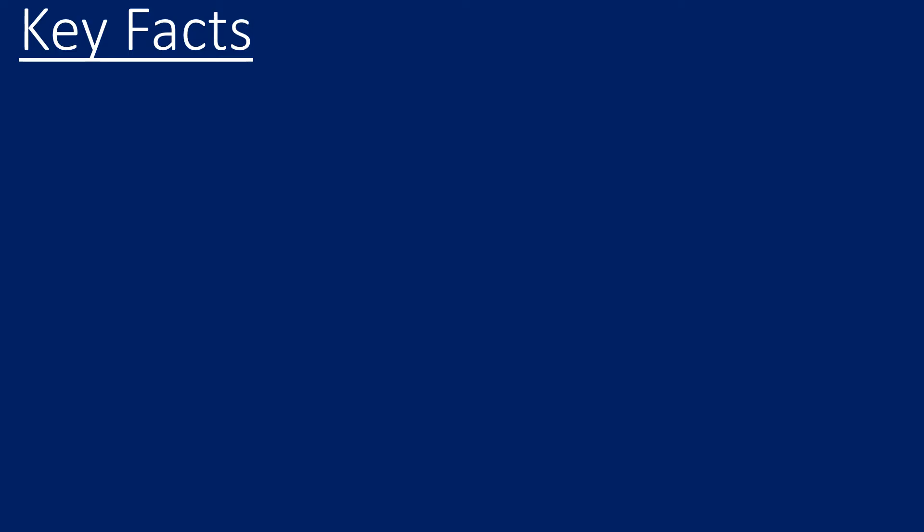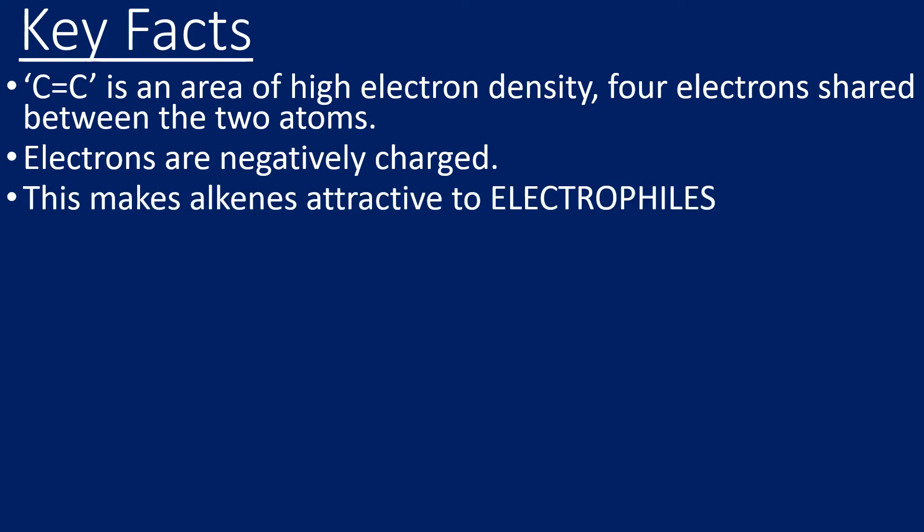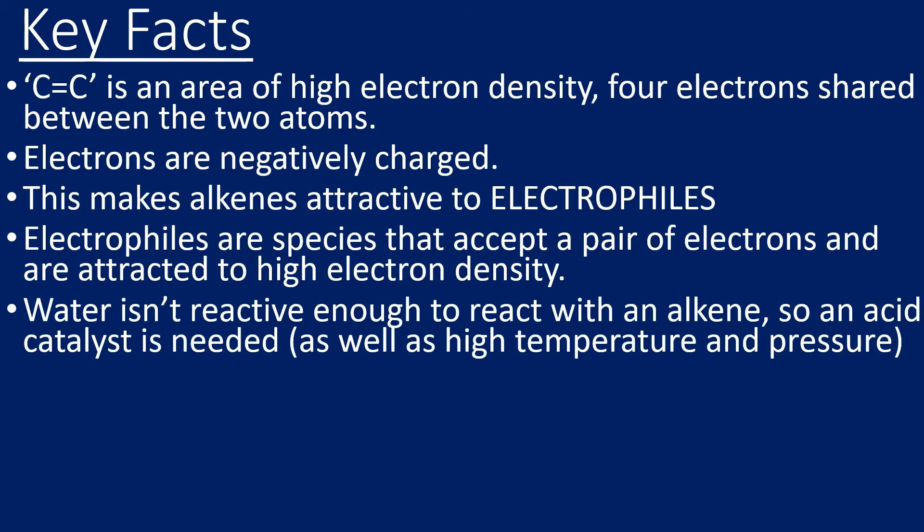Some key facts around this particular reaction: alkenes, because of that double bond, have an area of high electron density. There are four electrons shared between those two carbon atoms—two pairs of electrons. Electrons are negatively charged, which means they are attractive to electrophiles. An electrophile is a species that will accept a pair of electrons and is attracted to this area of high electron density. In this specific reaction, water isn't a strong enough electrophile to react with the alkene, so we do need a catalyst here.